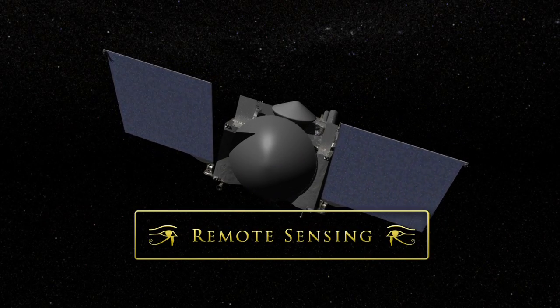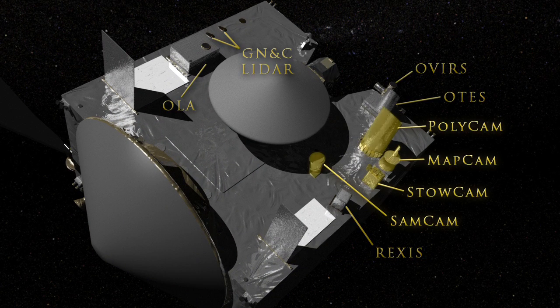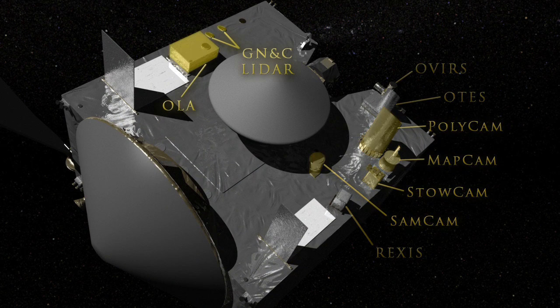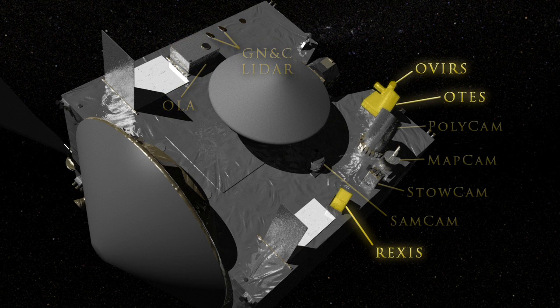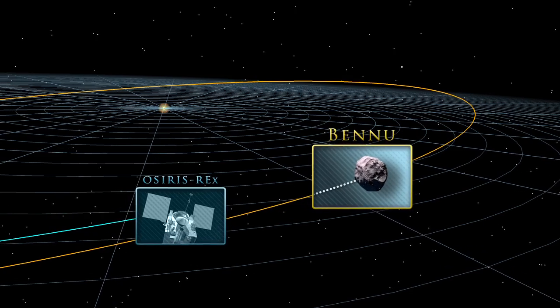The OSIRIS-REx payload contains several instruments for remote sensing observations, including high-resolution cameras, LIDAR, and X-ray visible light and infrared spectrometers. Knowing the physical properties of Bennu will help scientists refine its orbit.